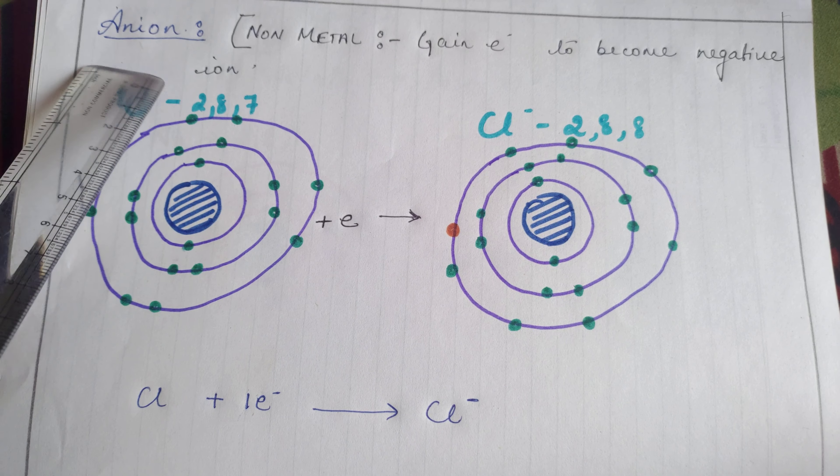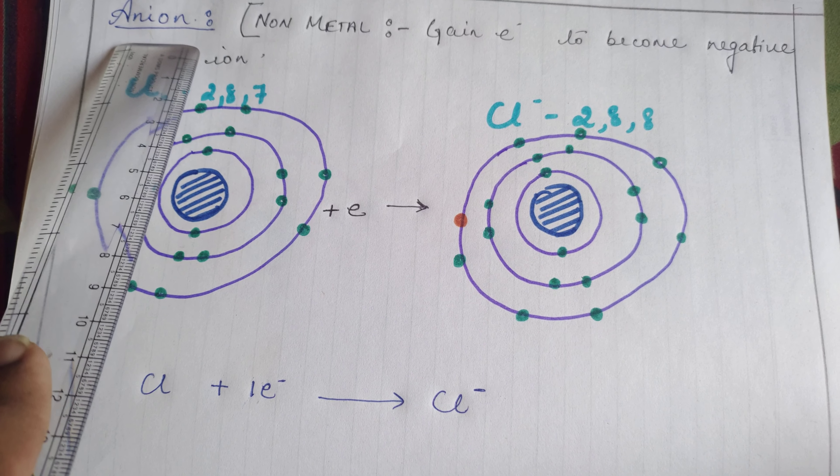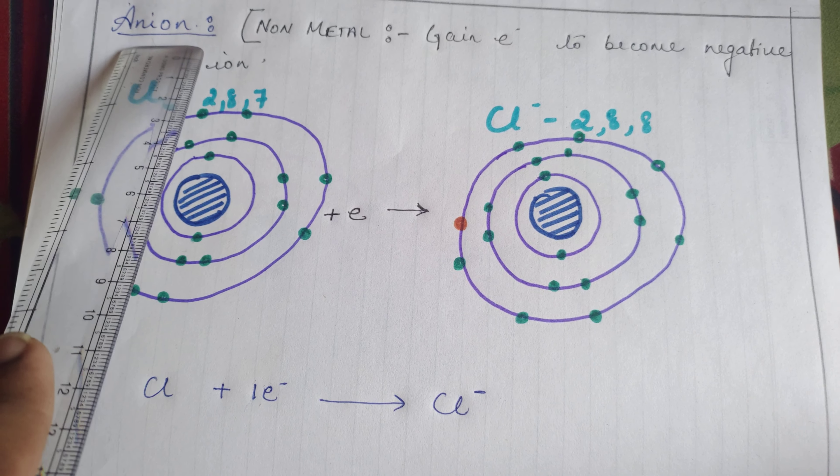Now to continue, let's understand what is an anion. Anions are negatively charged particles.